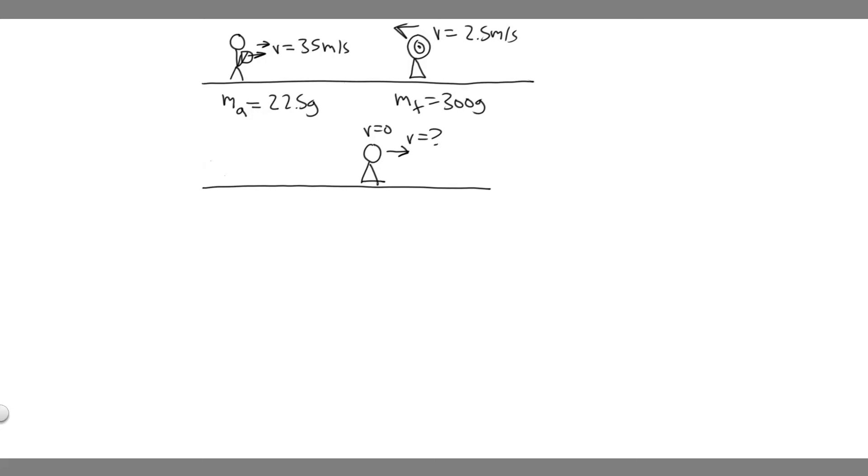In this problem we're told an archer shoots an arrow loaded to a 300 gram target that is sliding in her direction at a speed of 2.5 meters per second on a smooth slippery surface. The 22.5 gram arrow is shot with a speed of 35 meters per second and passes through the target which is stopped by the impact.